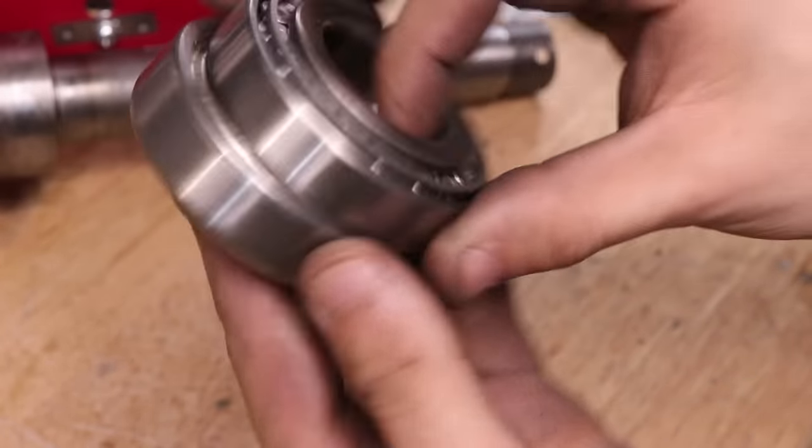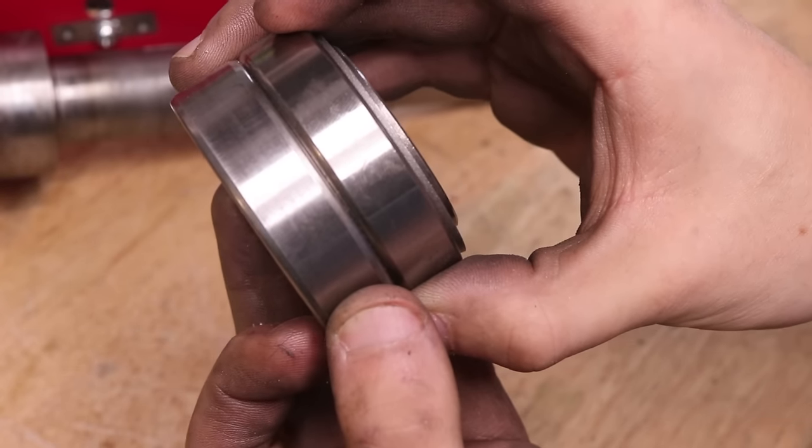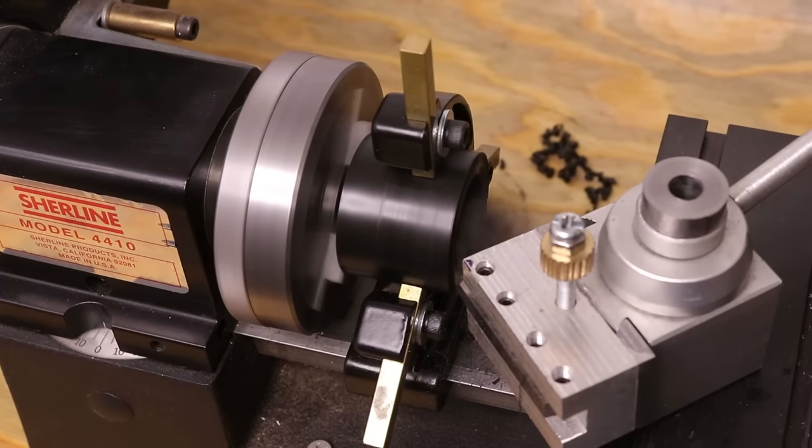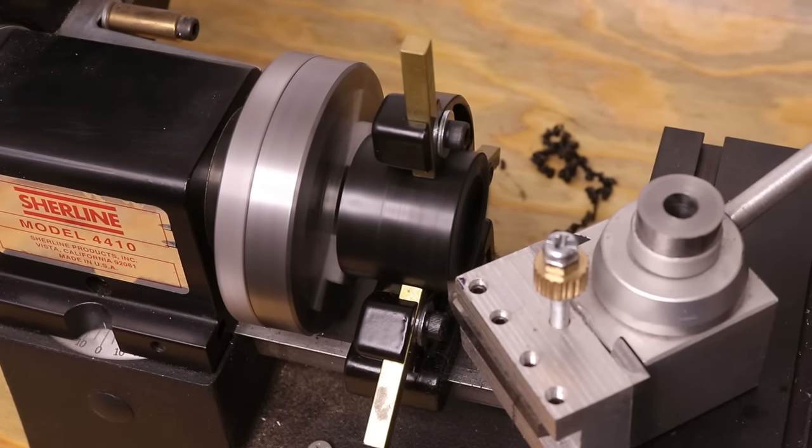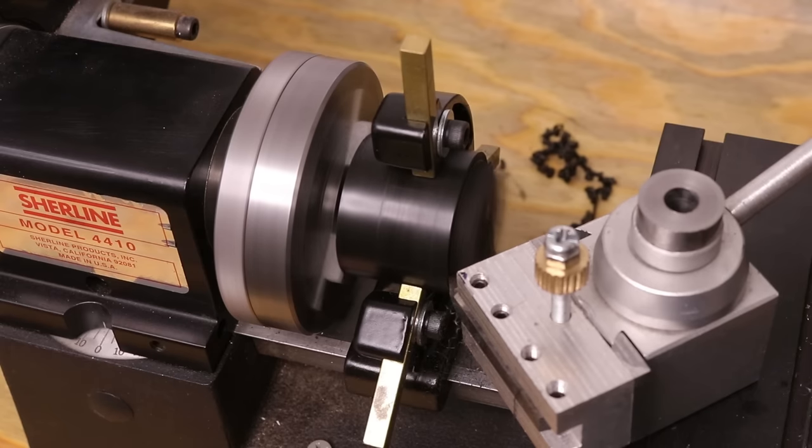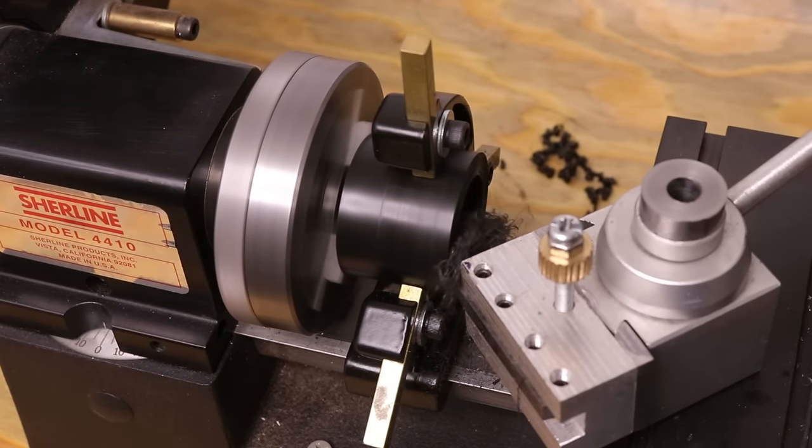One thing we'll need to account for is that the bearings are slightly wider than the stock ones, in total about three millimeters. As a result, we'll need to reduce the length of this spacer by about the same amount. I recommend that you do this before you disassemble the lathe, but thankfully I had the Sherline so I could do it with the lathe disassembled.